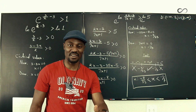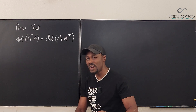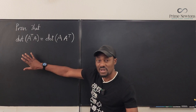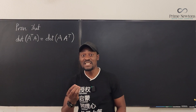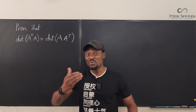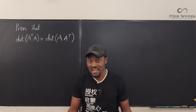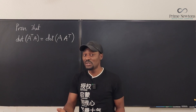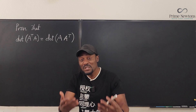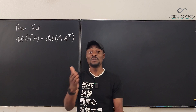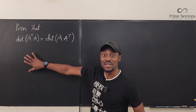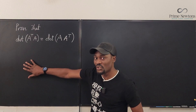There are two simple facts we need. First, when you take the determinant of any matrix, the answer you get is a real number. Second, there's a property of real numbers: multiplication is commutative. You can switch the positions — two times five is the same thing as five times two. That's all you need here.